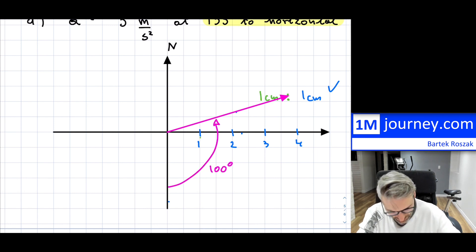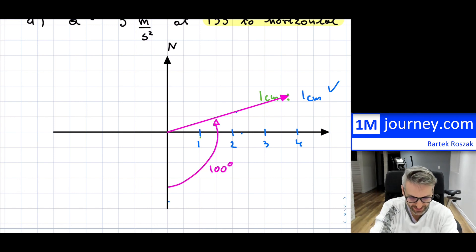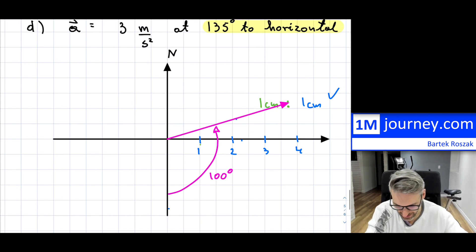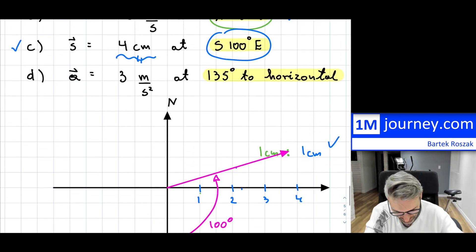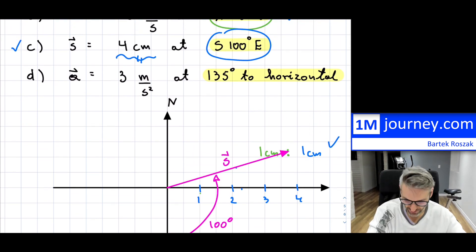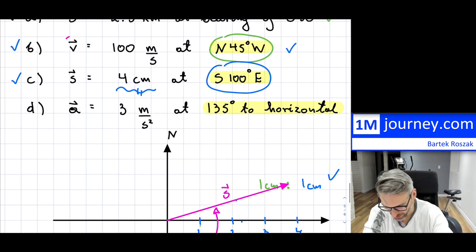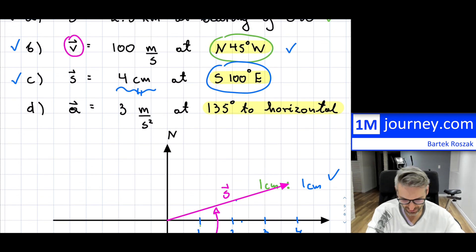That's 100 degrees right there. And I guess that is my vector — this would have been labeled S. Let's not forget to label it. That's what we would have for this one.